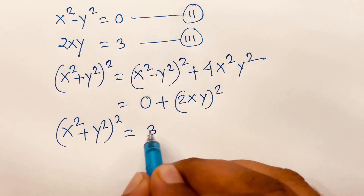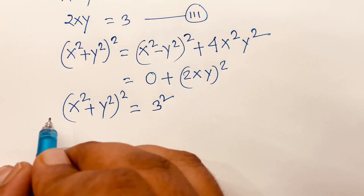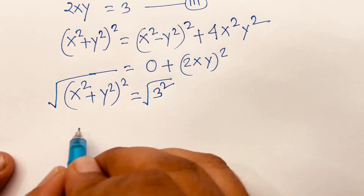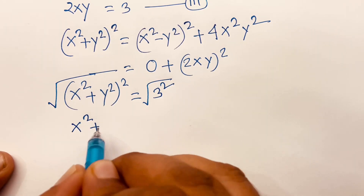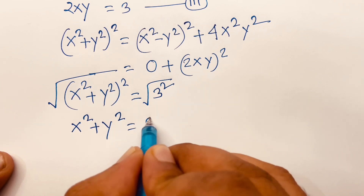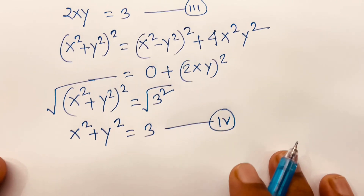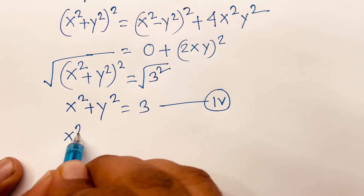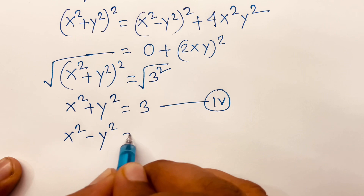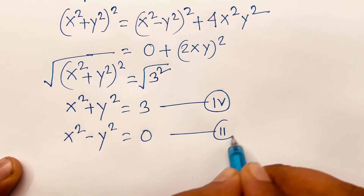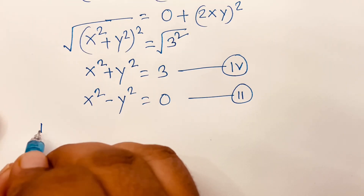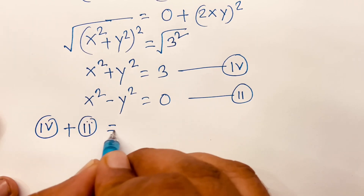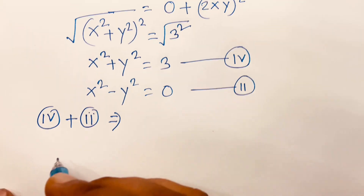So it will be 0 squared equals 0, plus (2xy) squared: 2 squared is 4 and x squared y squared. Then (x squared plus y squared) squared equals (2xy) squared, which equals 3 squared equals 9. Now if I take the square root of both sides, the square root is cancelled, so x squared plus y squared equals 3. This is our fourth equation, and our second equation is x squared minus y squared equals 0.